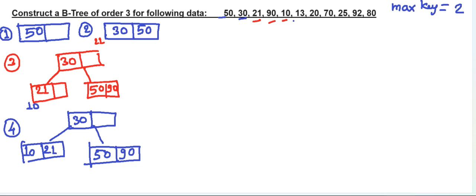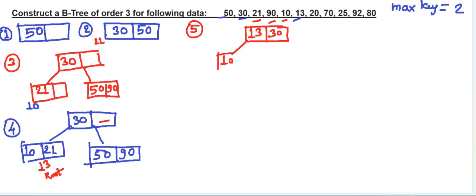Next element is 13. It should be added to the left of 30, but that node is full with 10 and 21. So we need to split it. The middle element becomes root — 13 is the middle element, so 13 goes up to the root. Ascending order is maintained, so the tree now has 13 and 30 at the root. At the left of 13 we have 10, and at the right of 13 we have 21. Then 50 and 90 remain to the right of 30.